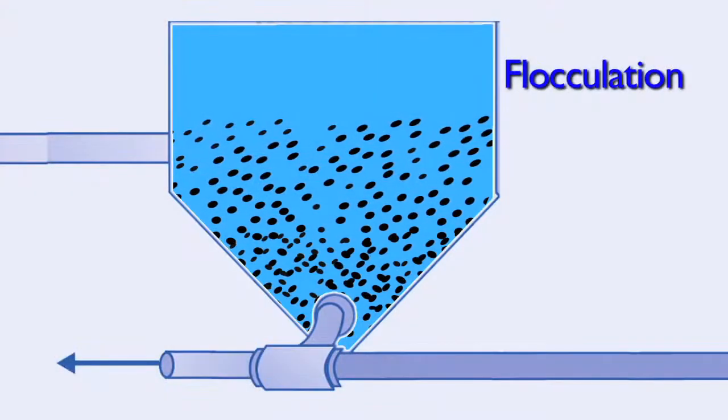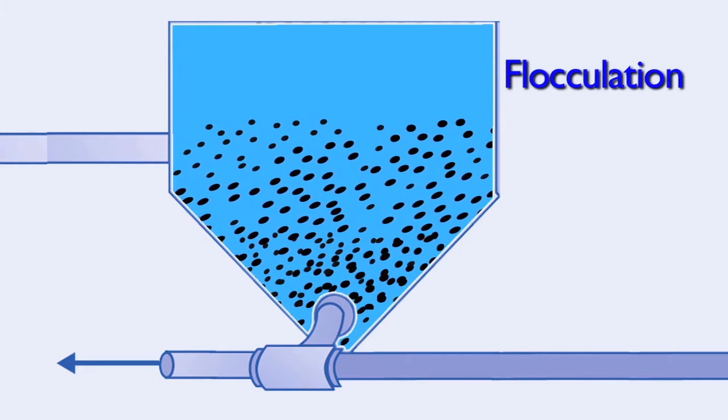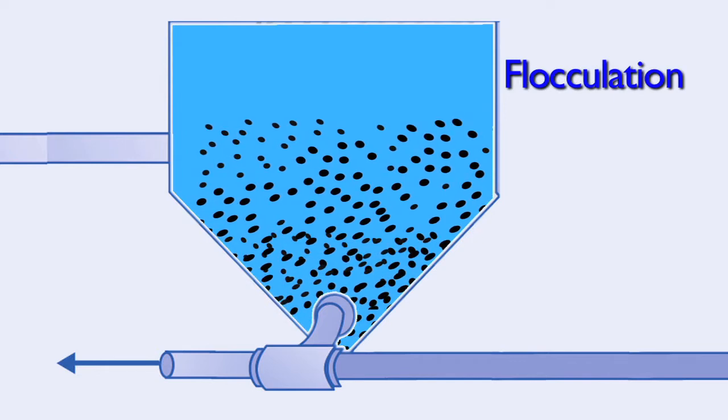When the coagulant is added, the smaller dirt particles stick together and form bigger particles. This is simply called the flock.